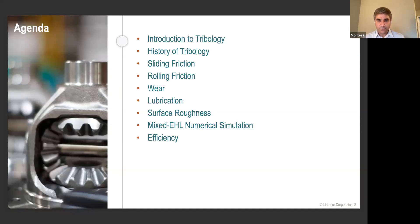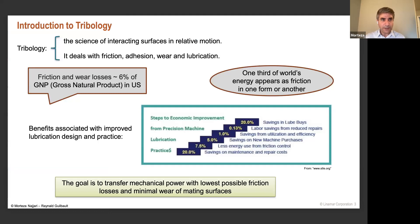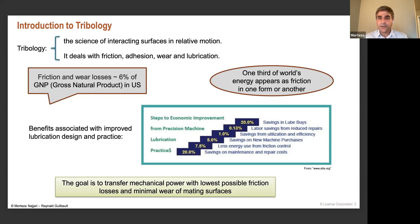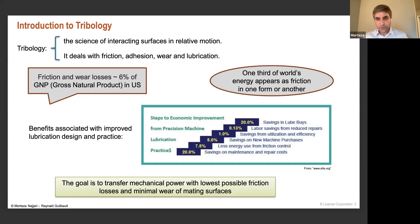We need these tools to estimate the efficiency of the gearbox. The definition of tribology is the science of interacting surfaces in relative motion — it deals mainly with friction, adhesion, wear, and lubrication. Some rough estimates show that around six percent of gross national product in the U.S. alone goes toward friction and wear losses.